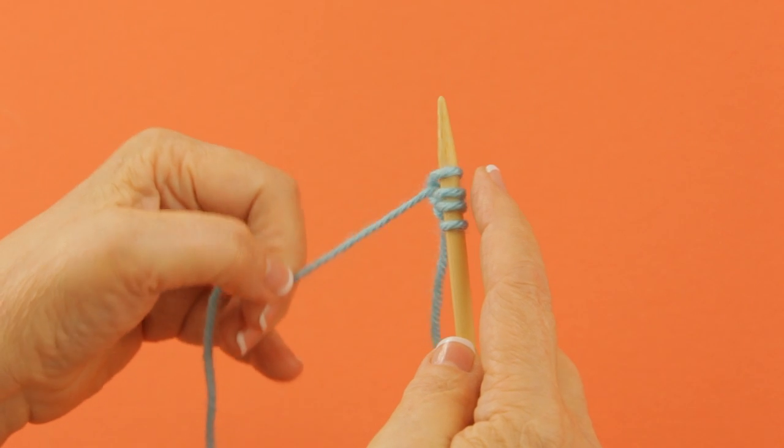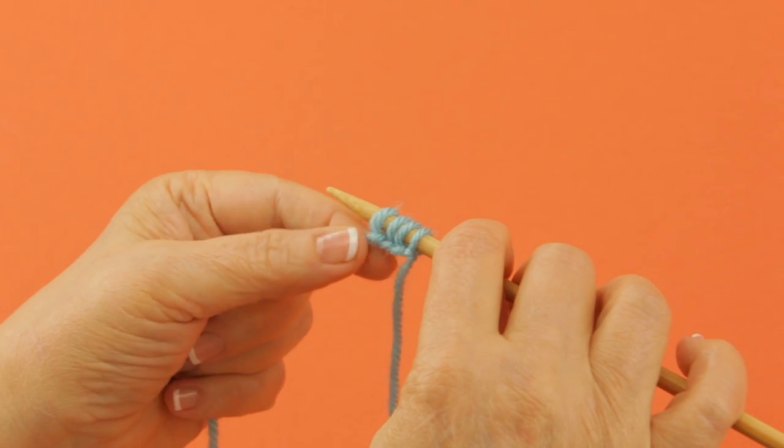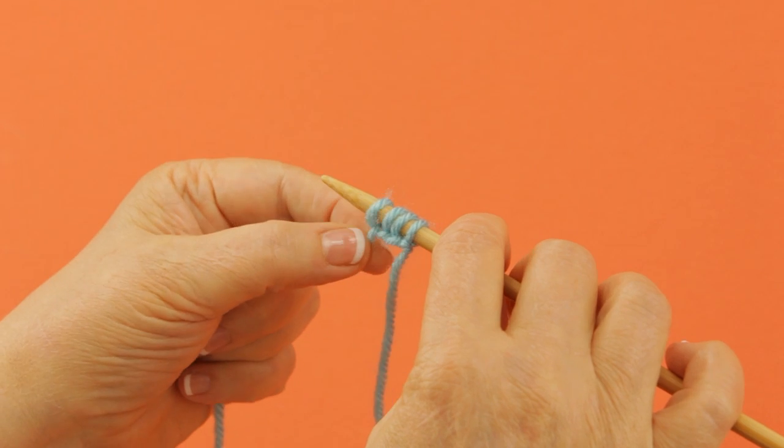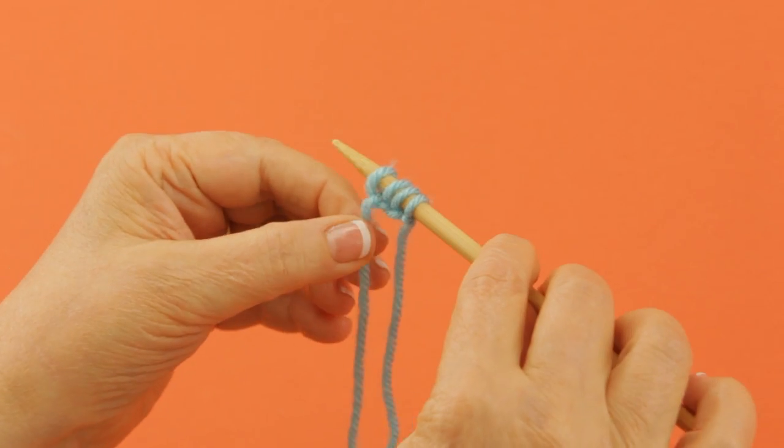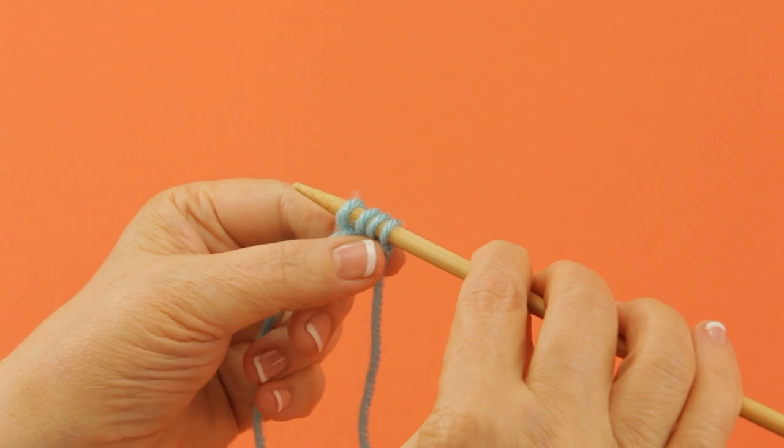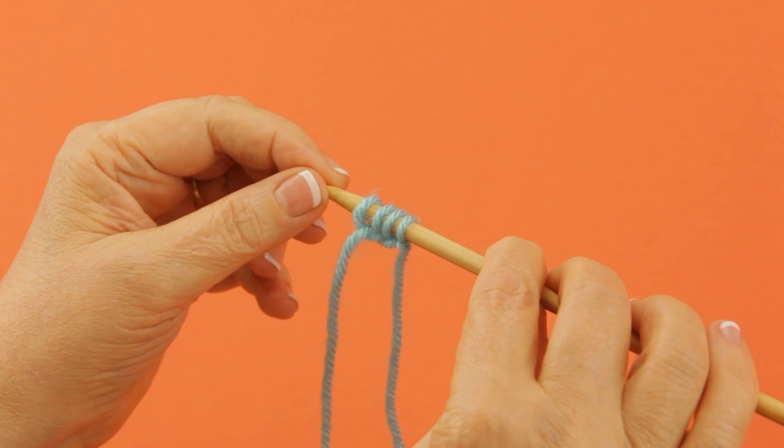It's not as flexible as some other cast-ons, but it does have kind of a nice edge on both sides. It looks pretty much the same. It's a little harder to knit into because it's not very flexible.